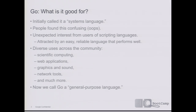What is Go actually good for? When we launched Go, we called it a systems language, which was probably a bit misleading. We originally thought it would be a good replacement for C++ and Java at Google. But it turned out there was a lot of interest from people in the dynamic languages camp — frustrated by scripting languages and enticed by an easy to use, reliable language that performs well. We've seen diverse uses from around the world in scientific computing, web applications, graphics, network tools, and much more. So now we just call Go a general-purpose language.